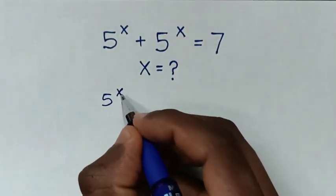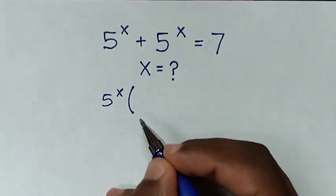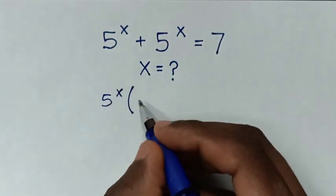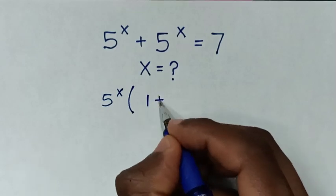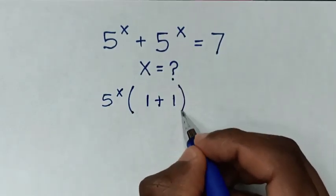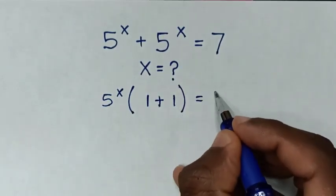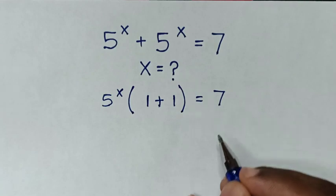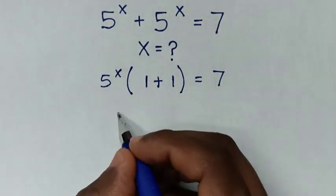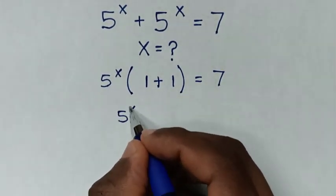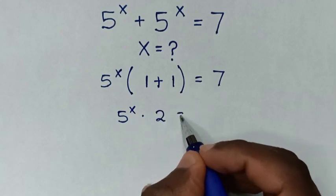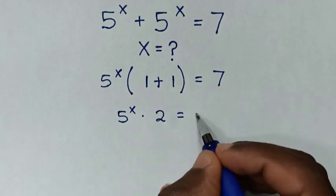We take 5 power of x out of the bracket. This divided by this is 1, plus this divided by this is 1, bracket is equal to 7. Then in the next step, it will be 5 power of x times 1 plus 1 is 2, is equal to 7.